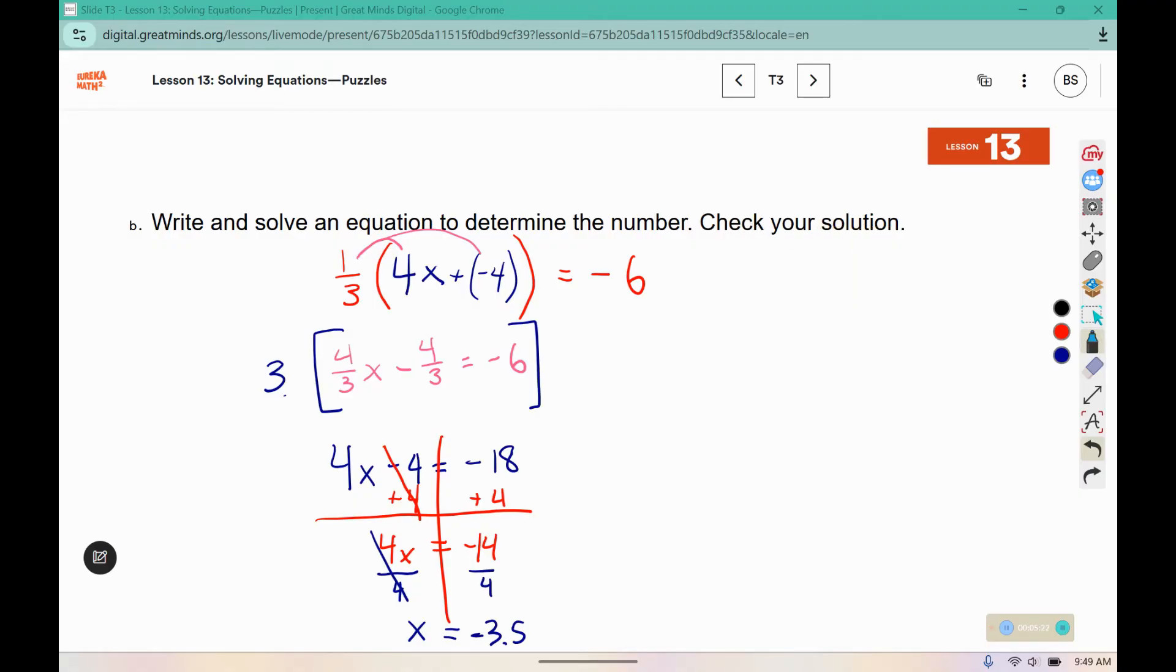Now to check our solution, we're going to go through those same steps again. Negative 3 and a half times 4 is negative 14. We added that negative 4 to it, which gives us negative 18, and then we took a third of that sum. A third of negative 18 is negative 6, so we were correct. The number they were thinking of was negative 3 and a half, and after we followed their steps, we also got negative 6.